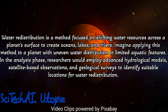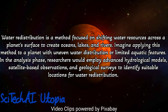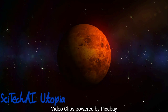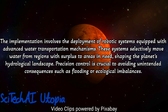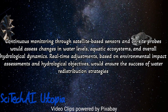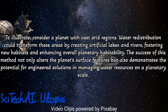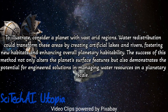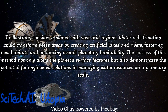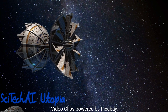Method 18: Water Redistribution. Conduct a comprehensive survey of the planet's existing water resources, including ice deposits, underground aquifers, and surface water sources. Develop a water redistribution strategy to move water to desired locations, balancing the creation of oceans, lakes, and rivers to support diverse ecosystems. Implement advanced technology for water transportation, potentially utilizing robotic systems, pipelines, or controlled releases from storage reservoirs. Model the impact of water redistribution on the planet's climate, taking into account factors such as evaporation, precipitation, and the influence on atmospheric conditions. Establish monitoring systems including satellite observations and ground-based sensors to track changes over time.